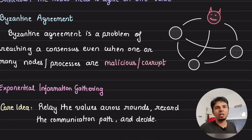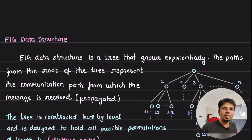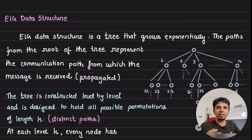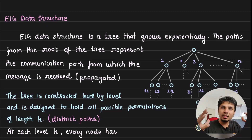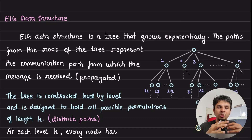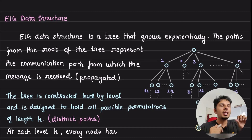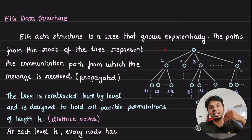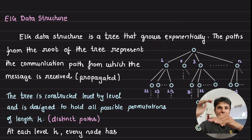This is where we talk about an algorithm called the Exponential Information Gathering algorithm, or EIG algorithm, to solve this problem. The EIG algorithm works on a data structure called the EIG data structure. The idea is to gather an exponential amount of information so that we can reach the correct consensus. The EIG data structure is a tree that grows exponentially, and this tree is constructed level by level.